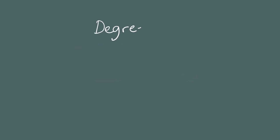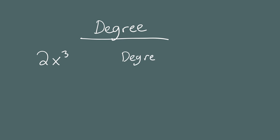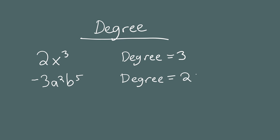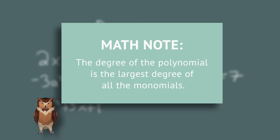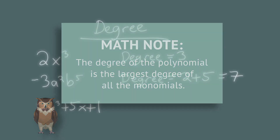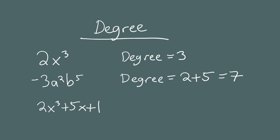Let's recap the degree rules. For a monomial with one variable, like 2x cubed, the degree is just the exponent — so the degree is 3. For a monomial with more than one variable, like negative 3a squared times b to the 5th, the degree is the sum of the exponents: 2 plus 5 equals 7. For a polynomial like 2x cubed plus 5x plus 1, you don't add all exponents together. Instead, look at the degree of each individual monomial and the degree of the polynomial is the largest of those — in this case, 3.